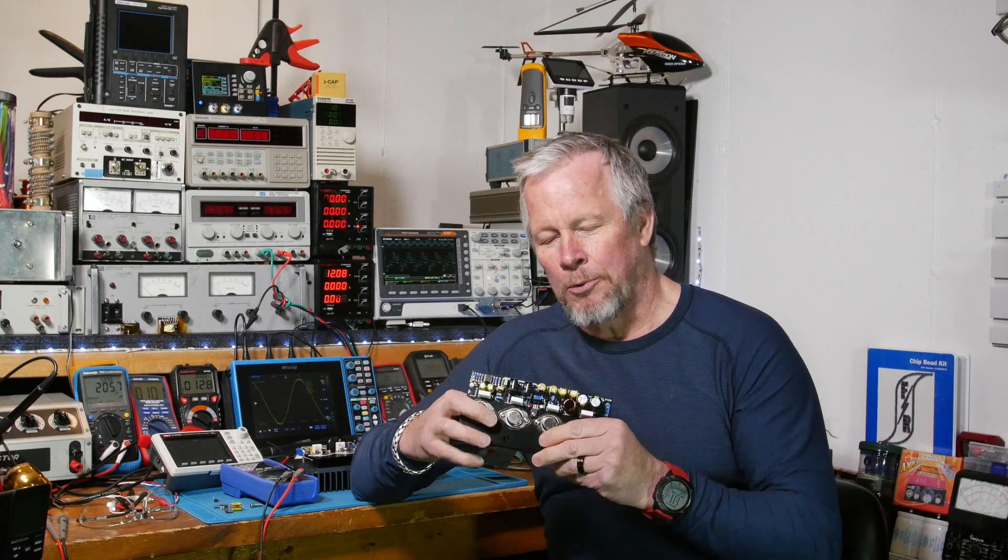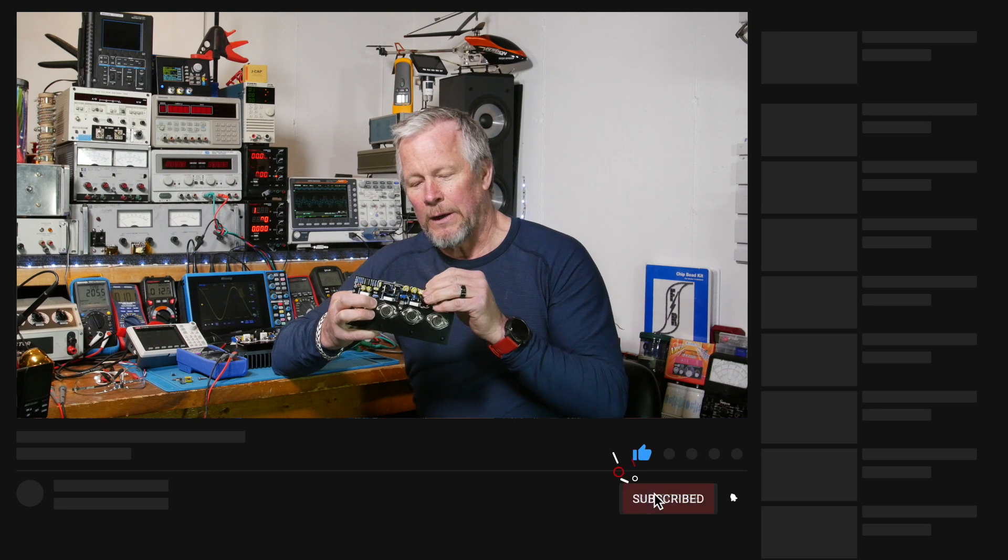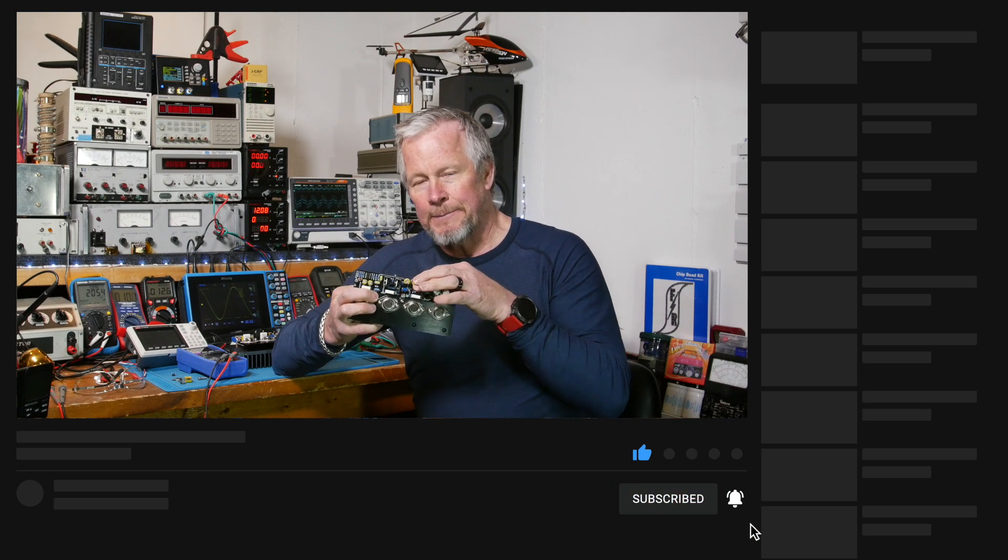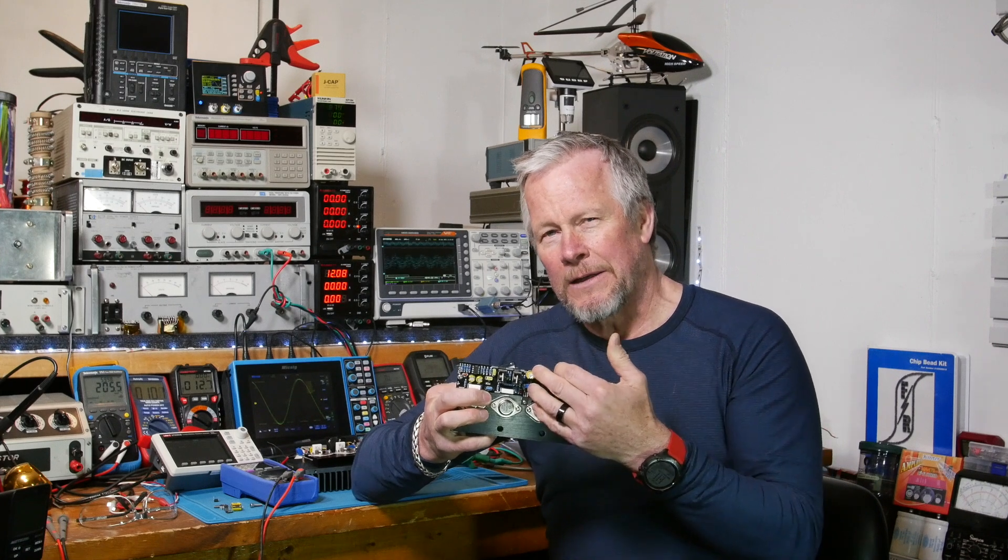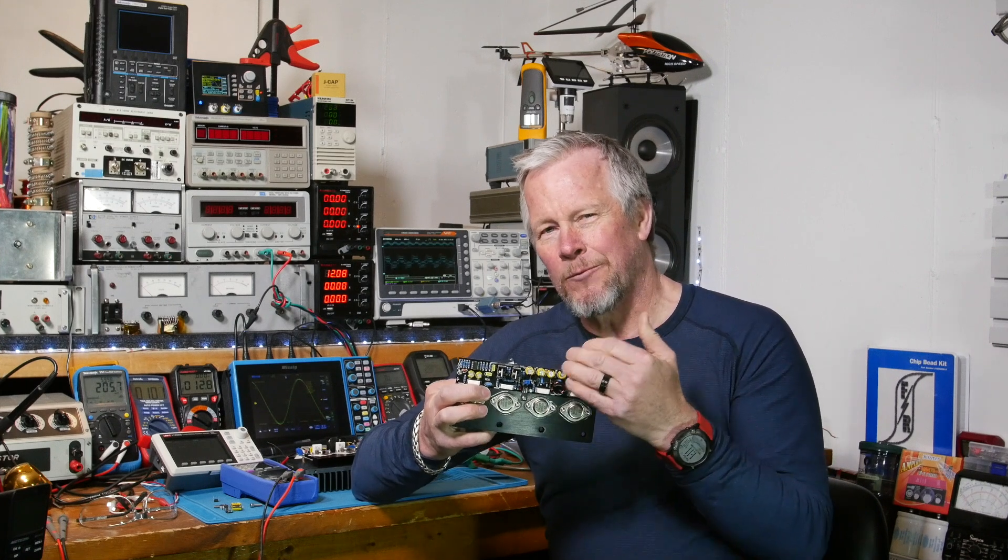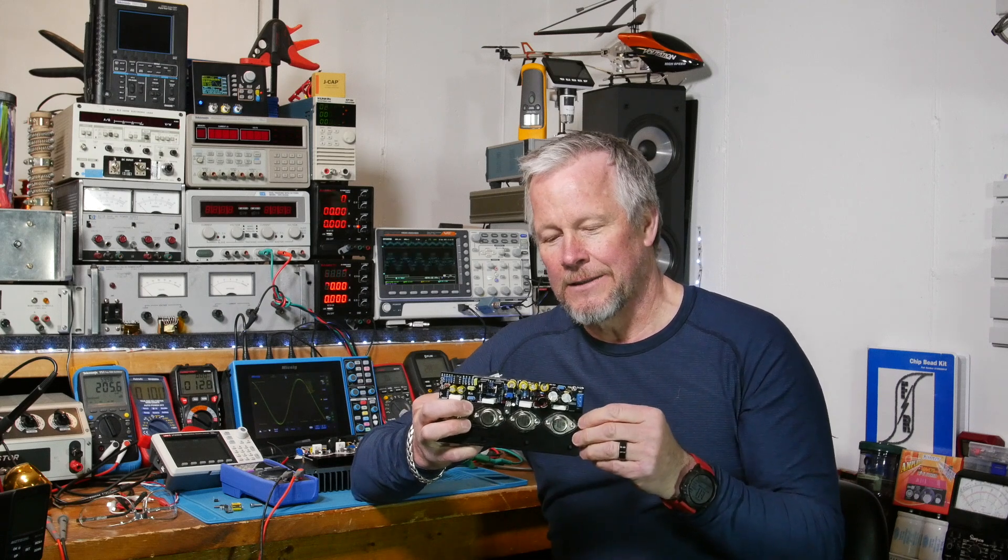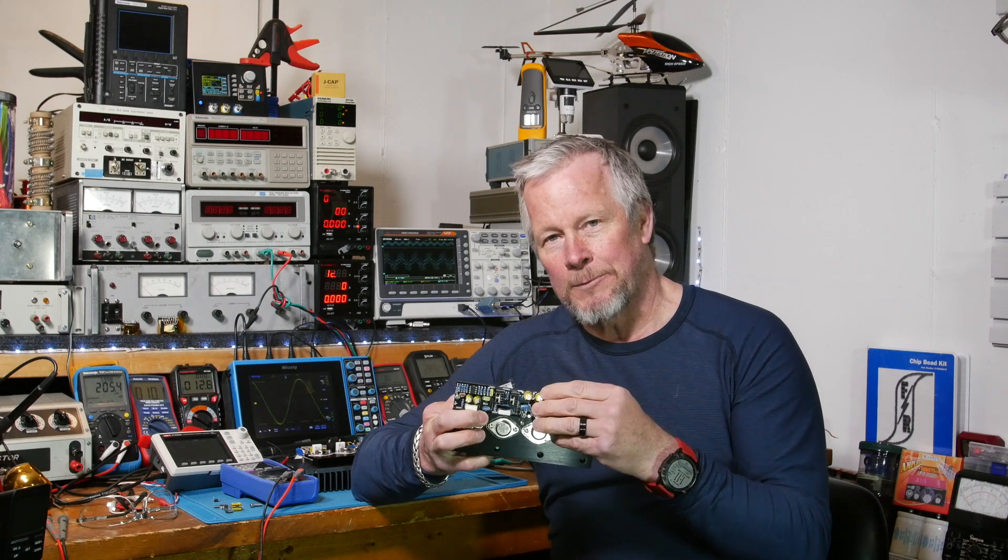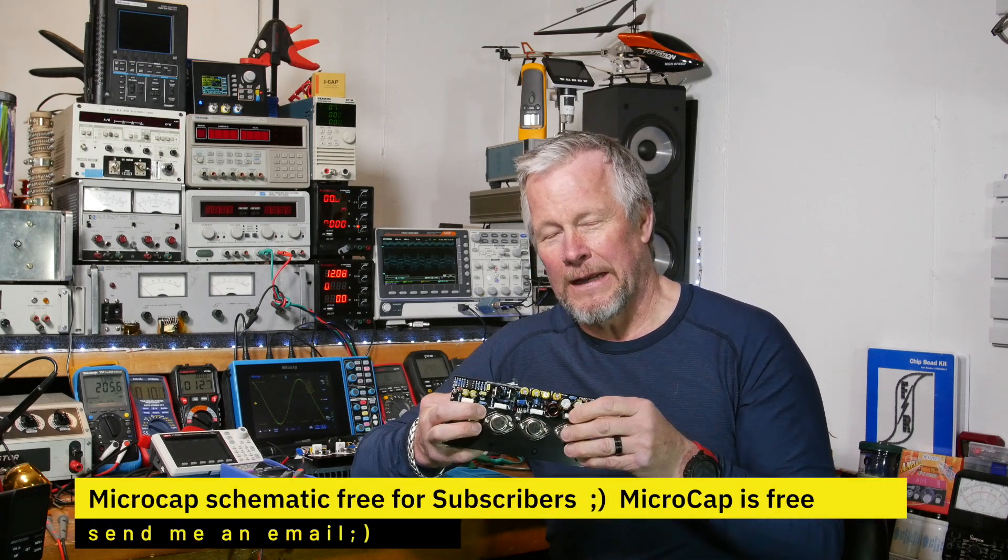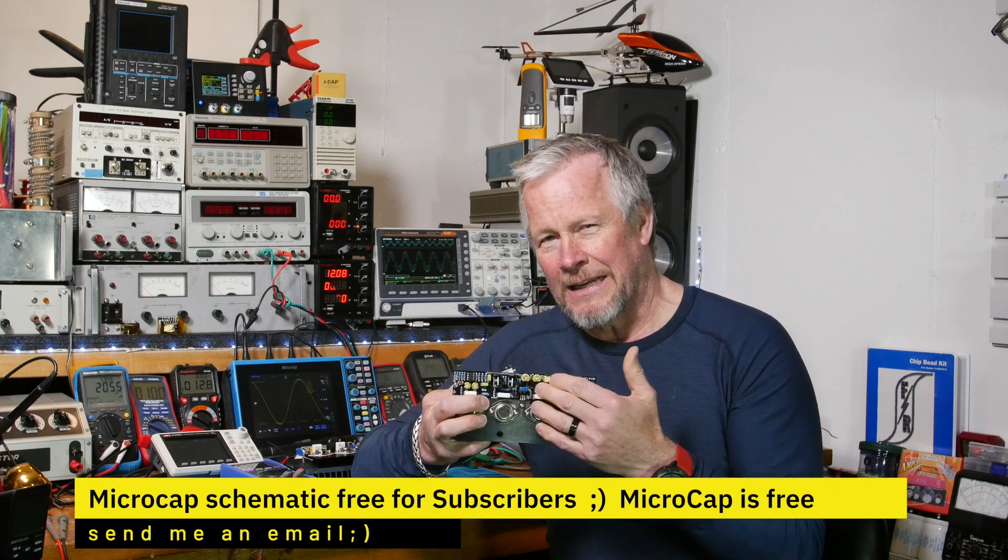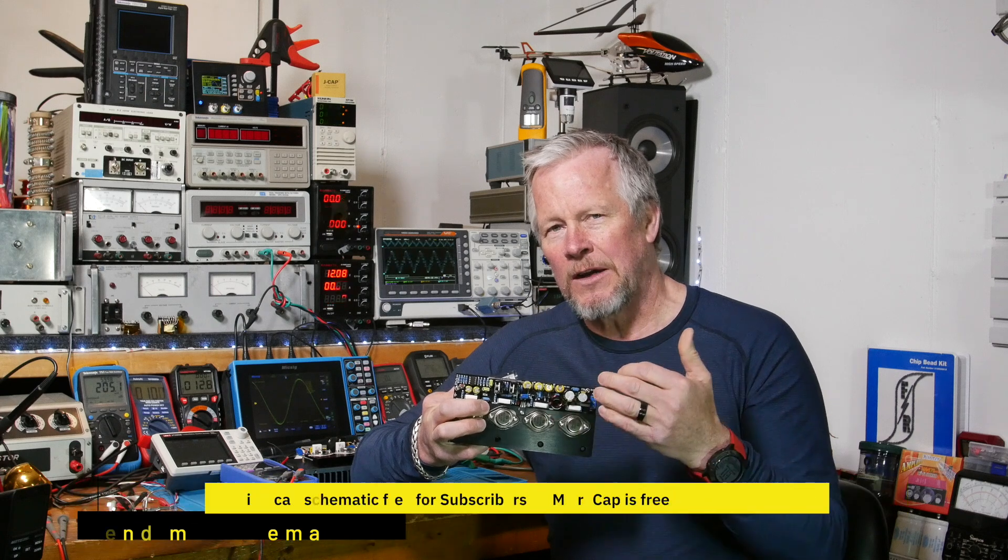And at this point, if I change that power supply again to 25 volts, these capacitors here for the regulator circuit, they're only rated at 25, so then we'd be running them right at their max rating. That's not a good idea with aluminum electrolytics, so I'd have to swap those out.